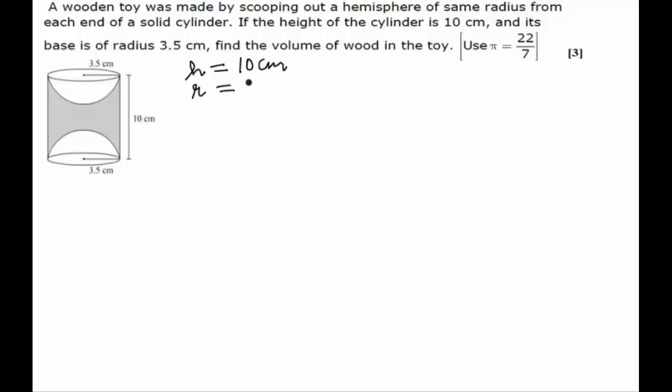Volume of the wood will be given by volume of cylinder minus the volume of two hemispheres, or I may say twice into volume of one hemisphere.